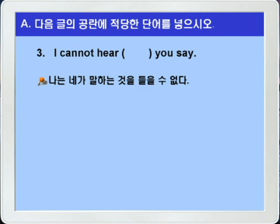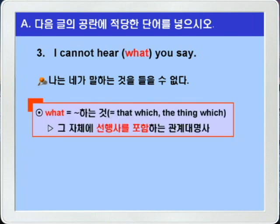앞에 보니까 선행사가 없죠? 블랭크에는 what이 들어가면 되겠습니다. what은 그 자체에 선행사가 포함된 관계대명사로 '뭐뭐 하는 것'이라는 의미를 가지죠. 여기 what은 타동사 say의 목적에 해당하는 목적격 관계대명사로 'that which' 혹은 'the thing which'로 바꿔 쓸 수 있습니다. 정답을 확인해보고 4번으로 가겠습니다.